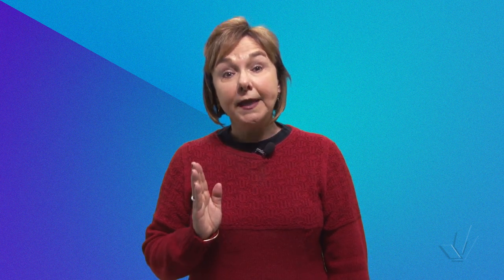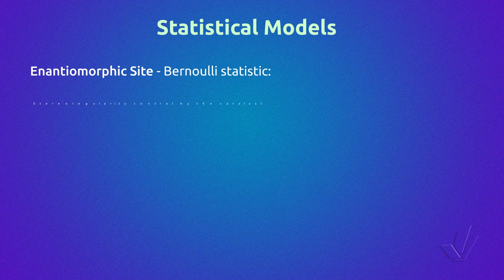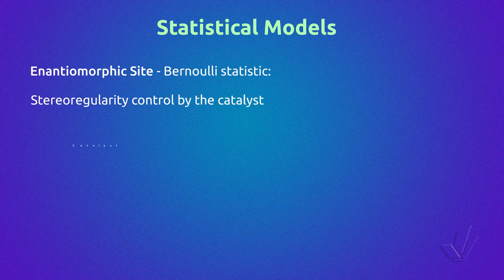We are going to return again to polypropylene, which is one of the most studied polymers due to its great economic importance. Carbon-13 NMR can also give us information about the mechanism of polymerization. We have to remember that chain polymerization is statistical. There are two main models for the mechanism of isotactic polymerization: an enantiomorphic site model in which the stereoregularity is controlled by the catalyst.